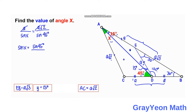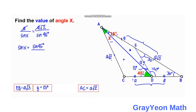For the second method, we consider the angle at D supplementary to 45 degrees, so that angle is 135 degrees. By the exterior angle theorem, the two remote angles at A (which are X and 15 degrees) sum to 135 degrees. We also find another angle in the figure: 180 minus 135 minus 15 equals 30 degrees.